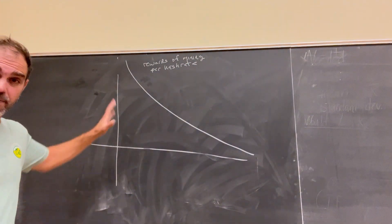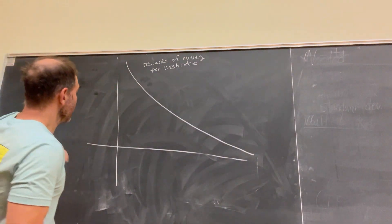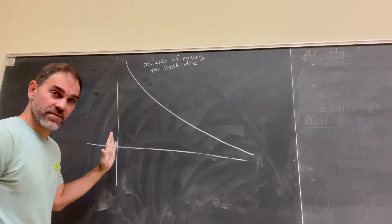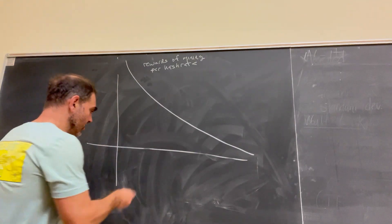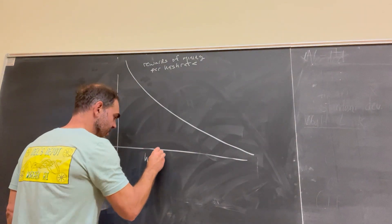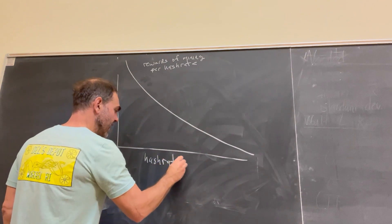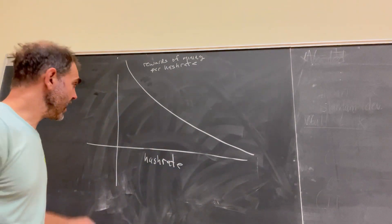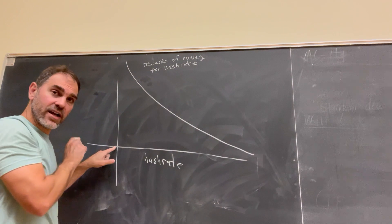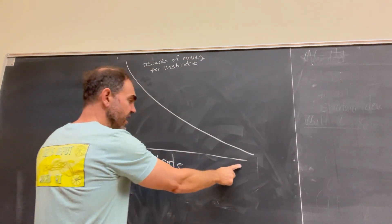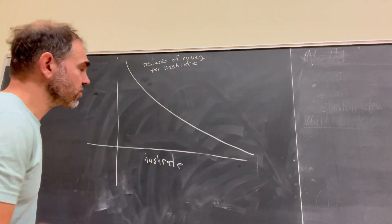So why is this one over X? It's because it's difficulty adjusted, right? If the difficulty adjusts, on this axis we have hash rate. If the hash rate is low, if very few people are mining, your rewards are higher. If the hash rate is high, your rewards are lower. This is difficulty adjustment.